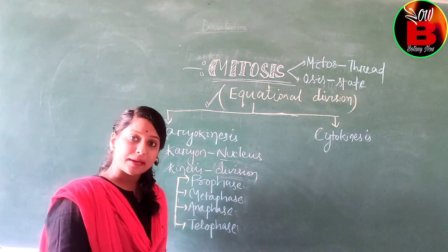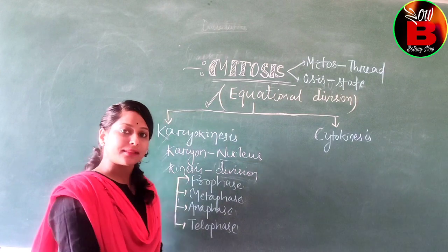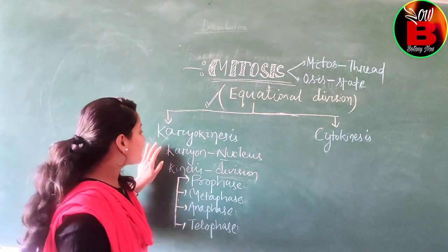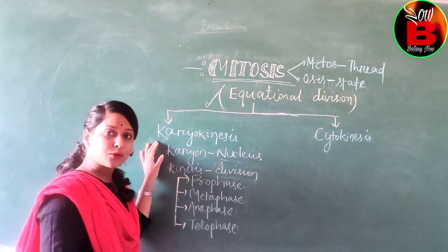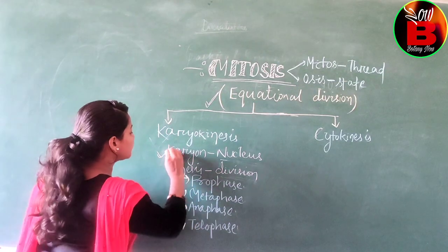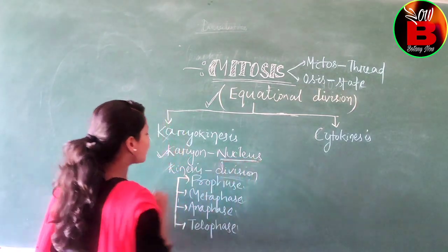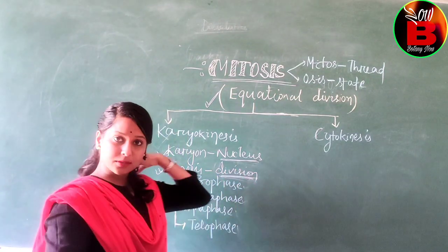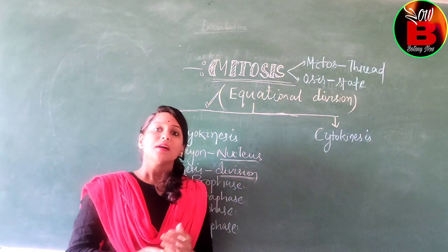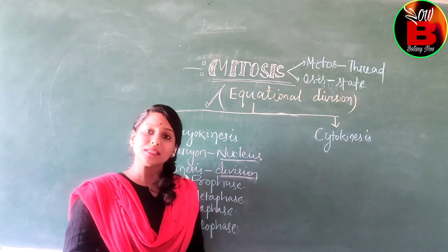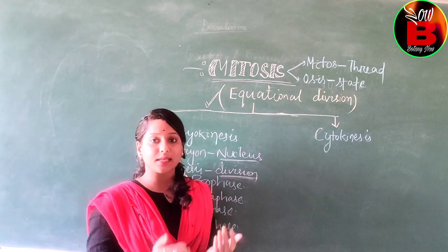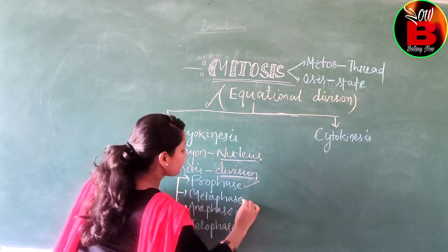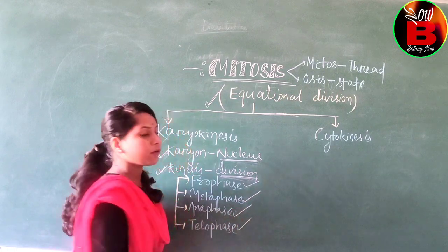The process of mitosis is completed in two steps: karyokinesis and cytokinesis. Karyokinesis is derived from two words — 'karyon' means nucleus and 'kinesis' means division. So in the process of karyokinesis, nuclear division takes place, and this nuclear division is completed in four subphases: prophase, metaphase, anaphase, and telophase. Then cytokinesis division takes place, forming the two daughter cells.